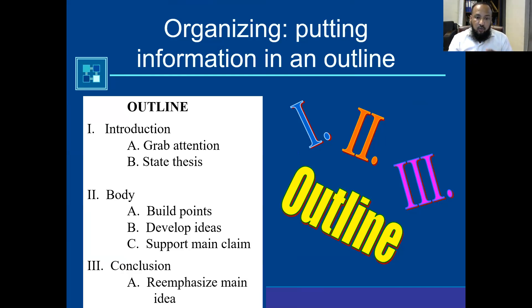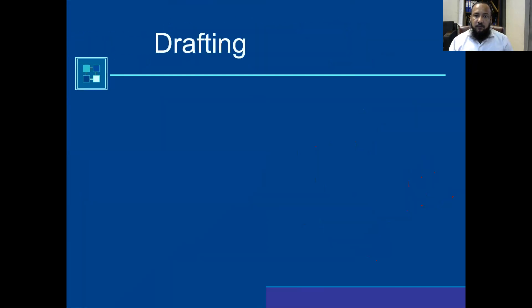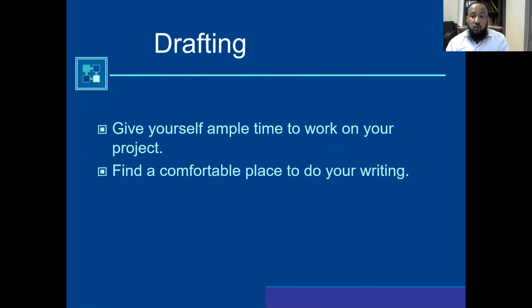What you need to do? Drafting: giving yourself ample time to work on your project. When you have the outline, you have shown which one should be in the first paragraph, which one should be in the second. Now you are writing. You are writing the first one, you have supported it, then the second one. Find a comfortable place to do your writing. You cannot write among many people. You need a separate place, peaceful place, tranquility, serenity should be there. Avoid distractions. You should not do anything. Turn off your mobile. Take breaks.